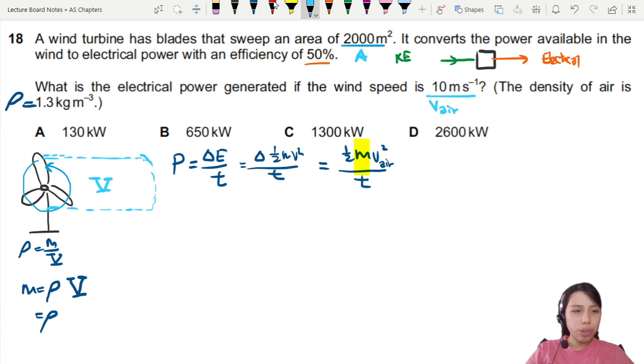If you want to use in terms of cross section area, the cross section area times the length, which is this length L. We can say this is A times L.